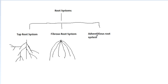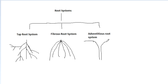Adventitious roots are roots that develop in unusual places — they can be above-ground roots. A common example is the banyan tree. The banyan tree has prop roots that grow down like this from the branches. So these prop roots are a part of the adventitious root system.